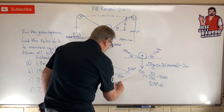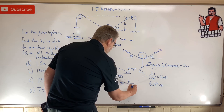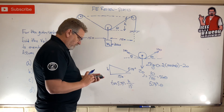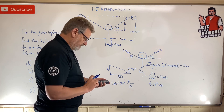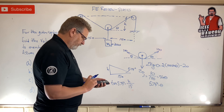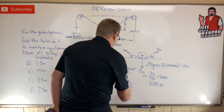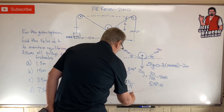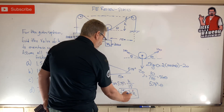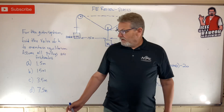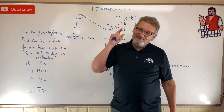Tan of 5.74 degrees equals opposite over adjacent, so H over 15. Solving: tan(5.74°) times 15 equals 1.507 meters. That's in meters since the 15 was in meters. The answer is A.